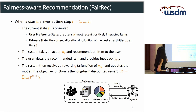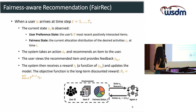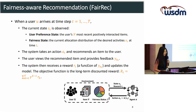The system takes an action A_T and recommends an item to the user. The user views the recommended item and provides feedback Y_A_T. The system then receives a reward R_T, which is a function of Y_A_T, and updates the model. The objective function is the long-term discounted reward, which is the sum of the discounted return from time T onward.